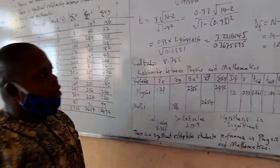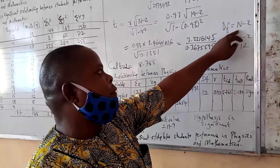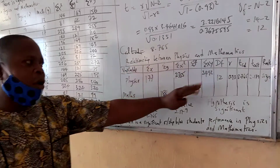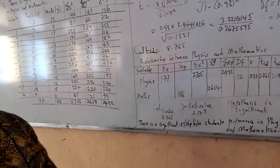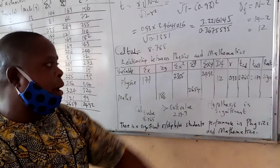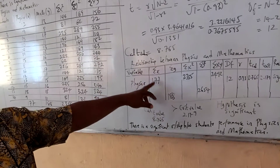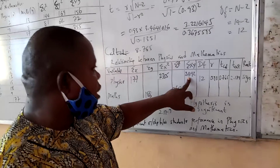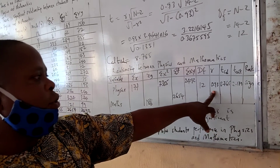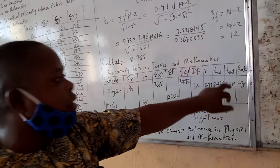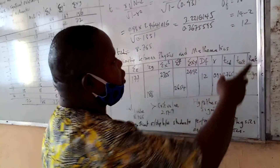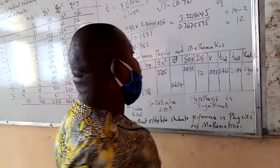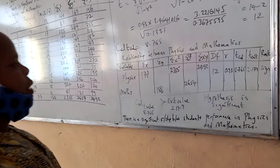Now we determine the degree of freedom. The formula for degree of freedom is n minus 2, which is 14 minus 2, giving 12. We then draw the correlation table showing the relationship between physics and mathematics, which includes: sums of physics and mathematics, squares of physics and mathematics, their product, the degree of freedom, the correlation coefficient, the calculated t-value, and the critical t-value. Looking up df = 12 at the 0.05 significance level in the t-table gives a critical t-value of 2.179.